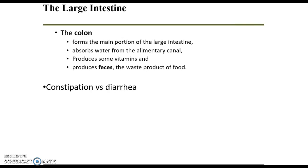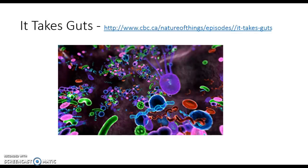The large intestine, or colon, absorbs a lot of water. You'll also find a lot of healthy bacteria in there that can produce some vitamins for us. At the end of the colon you get feces, which is the waste product. Constipation versus diarrhea — the large intestine plays a big role. Diarrhea means too much water in stool, with food passing through too quickly. Constipation means food moving too slowly and absorbing too much water, often from not eating enough fiber or not drinking enough water.